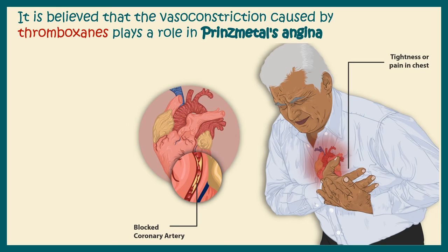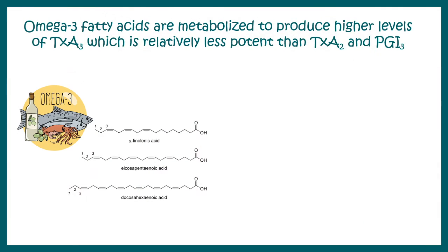It is believed that vasoconstriction caused by thromboxane could be the underlying cause of Prinzmetal's angina or any kind of cardiac inflammatory disease — thromboxane could be playing one of the leading roles in these conditions.